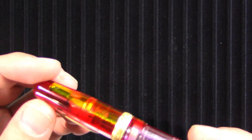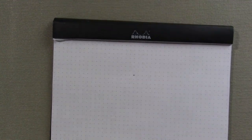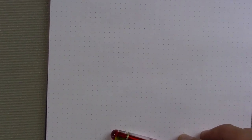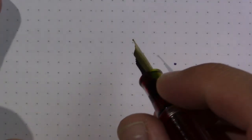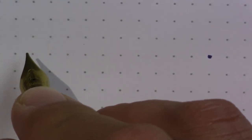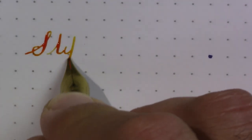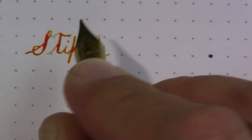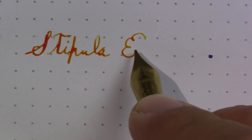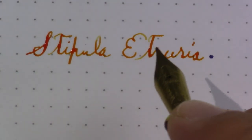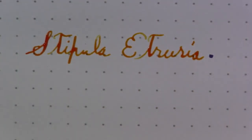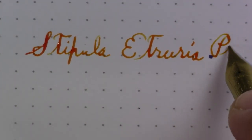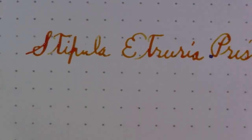I want to show you how it writes, and then I'll throw in a few more comments about this pen. Since this is a first impressions video, I'm going to use Rhodia dot paper instead of my review notebook. And I don't know exactly what I'm going to write yet, but we should probably write the name of the pen. Can you tell that this is a very wet writer?